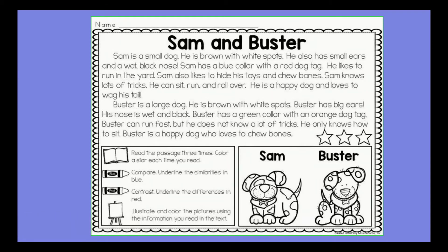I'll read the passage aloud. The title is 'Sam and Buster.' Sam is a small dog. He is brown with white spots. He also has small ears and a wet black nose. Sam has a blue collar with a red dog tag. He likes to run in the yard. Sam also likes to hide his toys and chew bones. Sam knows lots of tricks — he can sit, run, and roll over. He is a happy dog and loves to wag his tail. Buster is a large dog. He is brown with white spots. Buster has big ears. His nose is wet and black. Buster has a green collar with an orange dog tag. Buster can run fast, but he does not know a lot of tricks. He only knows how to sit. Buster is a happy dog who loves to chew bones.